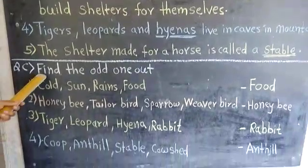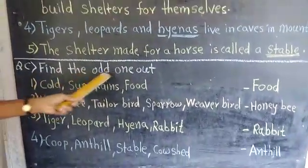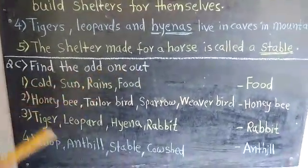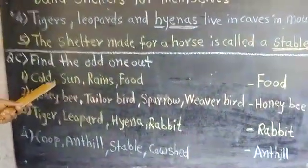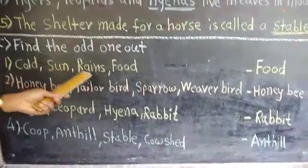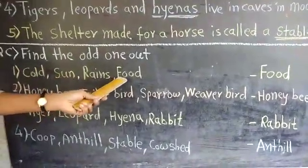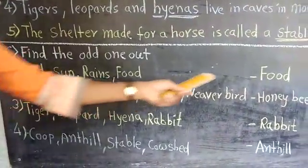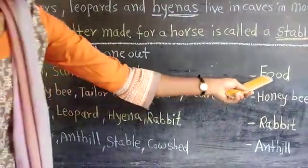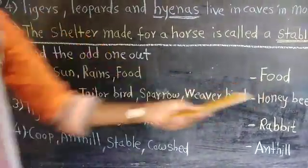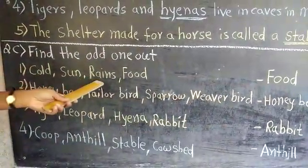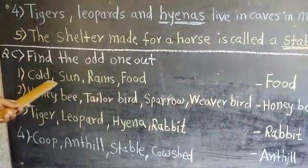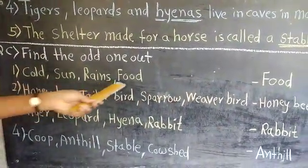Find the odd one out. First: cold, sun, rain, food. Food is the odd one. Why? Cold, sun, and rain are seasons. Food is the odd one out.